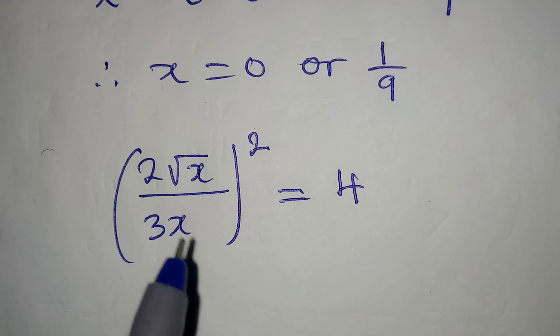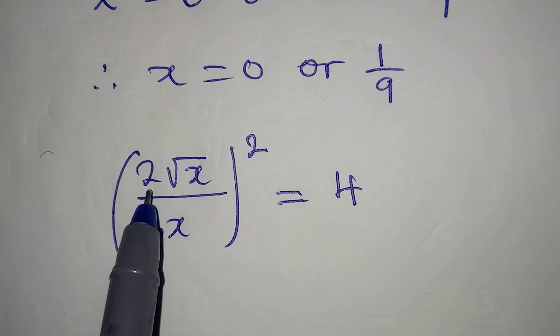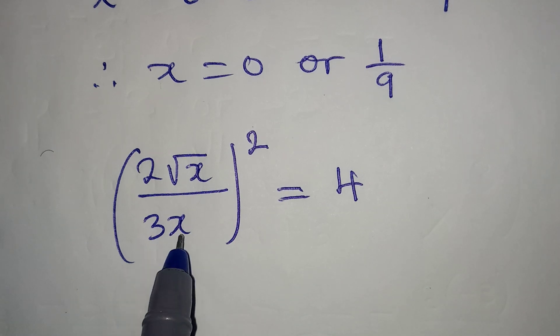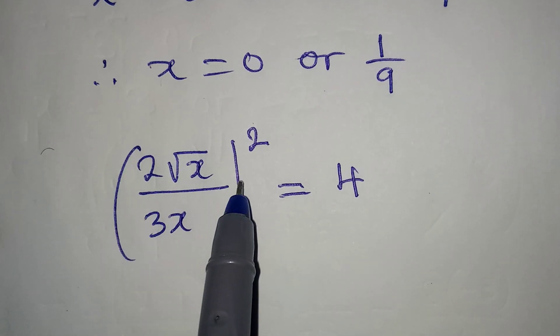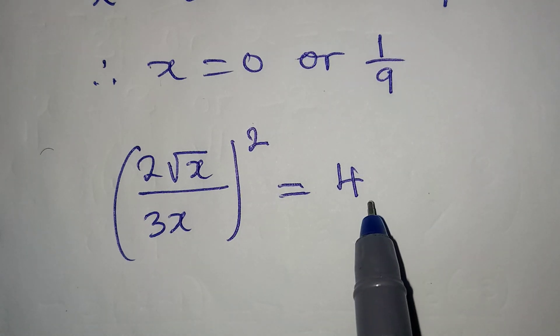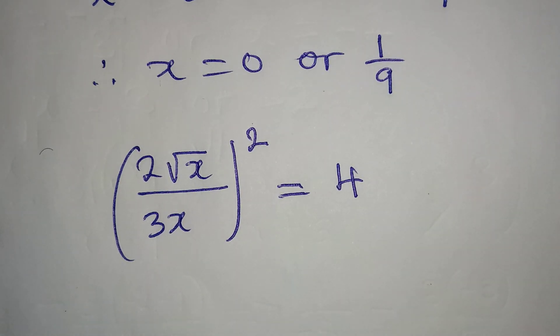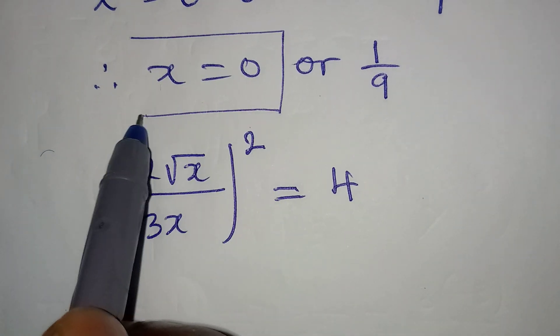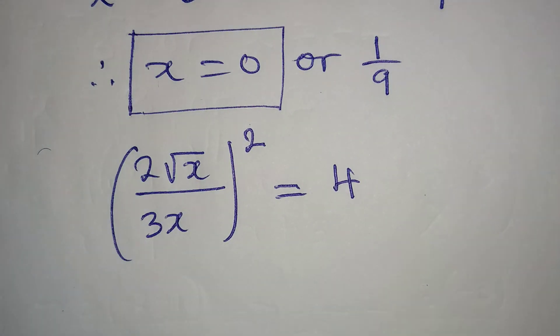If I put 0 in here, it will be 2 times 0 over 3 times 0². Now it's going to be 0 squared, which will never give 4. So this means that x = 0 does not satisfy the equation.